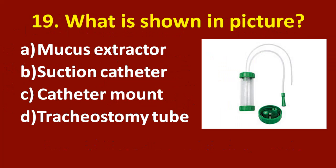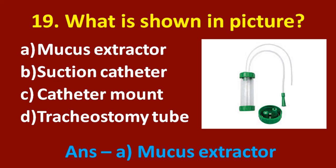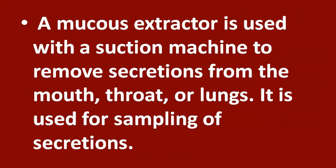Nineteenth question: what is shown in the picture? Option A: mucus extractor. Option B: suction catheter. Option C: catheter mount. Option D: tracheostomy tube. The correct answer is option A, mucus extractor. A mucus extractor is used with a suction machine to remove secretions from the mouth, throat, or lungs. It is also used for sampling of secretions.